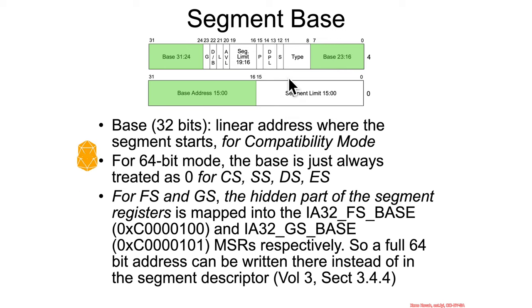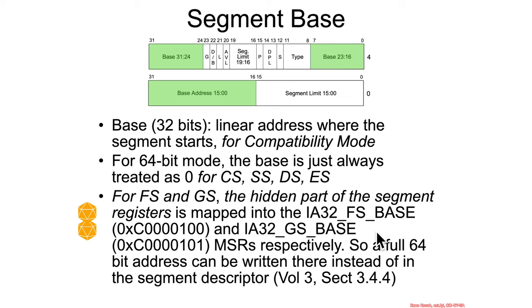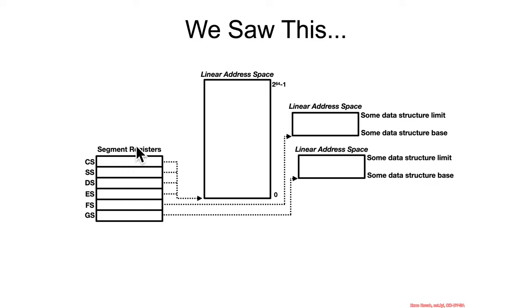More relevantly, there are a couple of model-specific registers. The hidden part of the segment register has been expanded to 64 bits and mapped into these architectural MSR registers: IA32_FS_BASE and IA32_GS_BASE. Software that actually wants to set a full 64-bit base address for FS and GS segments has to do so via these model-specific registers. When AMD was making the 64-bit extensions, CS, DS, SS, and ES were always pretty much pointing at giant flat memory spaces anyway.